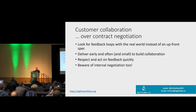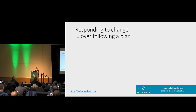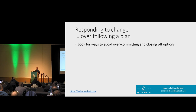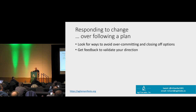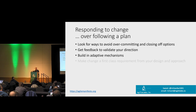A lot of the negotiation teams end up doing is between different departments or between managers and teams. Look for ways to work together and solve the problem rather than just trying to force each other to agree to a commitment. The last of our values is responding to change over following a plan. In an Agile process, you're trying to avoid overcommitting and closing off options. If a user told you tomorrow they want something different, could you respond? You should be constantly getting feedback that validates your direction and be able to act on it.